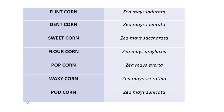The first type is flint corn, called Zea mays indurata. A memory tip: 'flint' contains the letters of 'iron,' and 'indurata' also contains 'iron,' and it is mostly grown in India — India also starts with the same sound. So the tip to remember is flint corn = Zea mays indurata, mostly grown in India.